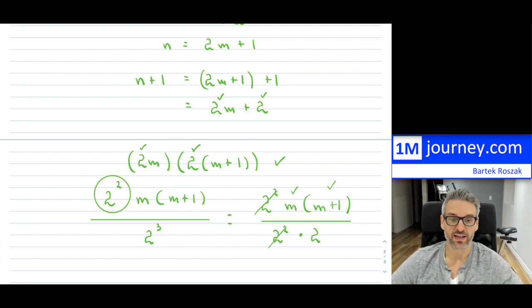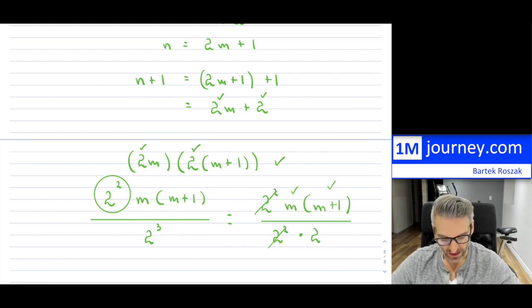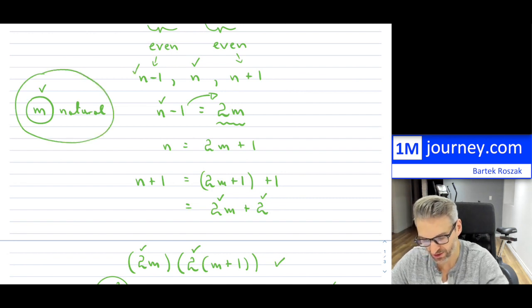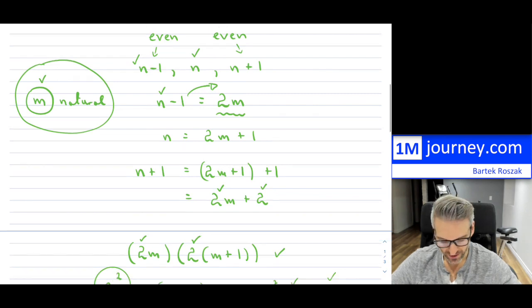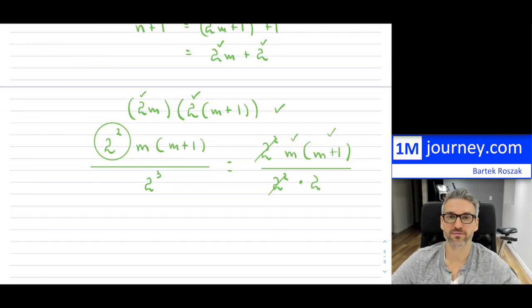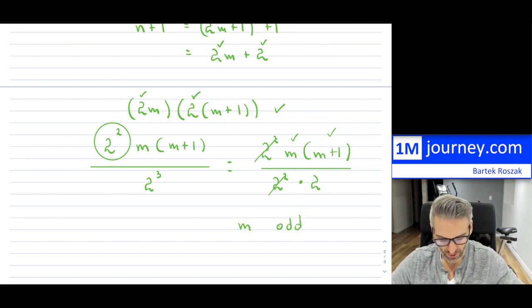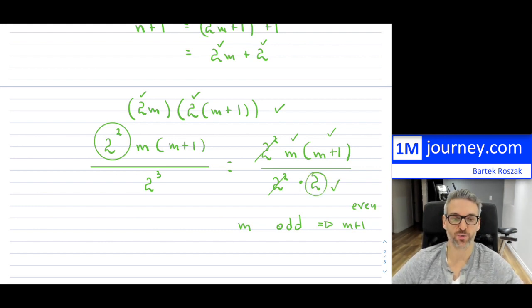And of course it is, because either m or m plus 1 is going to be even. So m is some natural number, right? We don't know exactly what it is because we don't exactly know what m is, but it is some natural number. So m is either going to be odd or it's going to be even. So m is either odd, which means if that is the case, then m plus 1 has to be even. And if it's even, then it's definitely divisible by 2. And we have just shown that the whole thing is now divisible by 8.